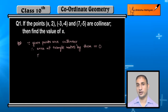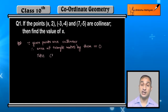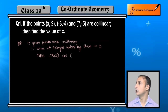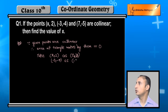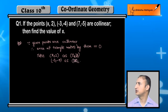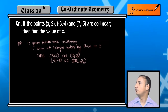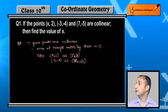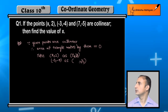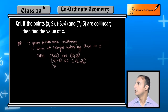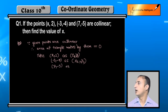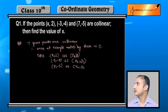अब मैं area of triangle की formula को apply करूंगा और x की value निकालूंगा। Take the first point x, 2 as x1, y1. The second point minus 3, minus 4 as x2, y2. The third point is 7, minus 5 as x3, y3.